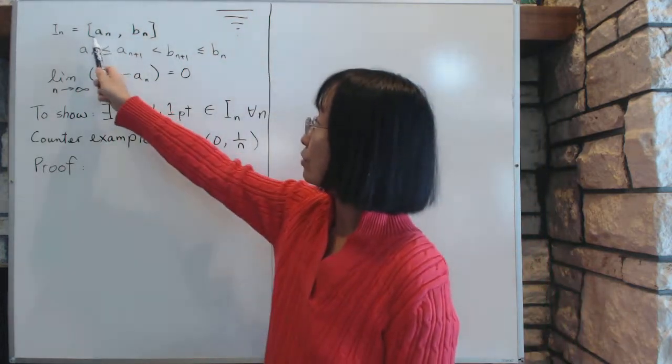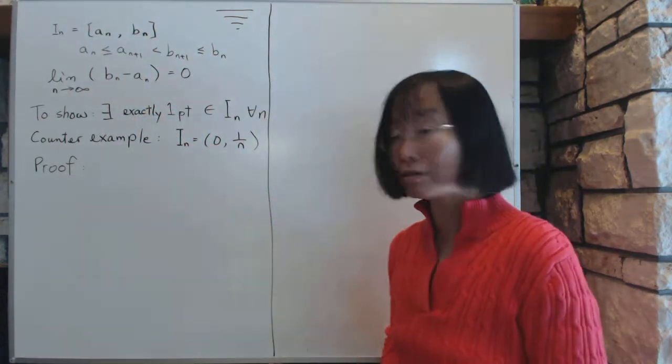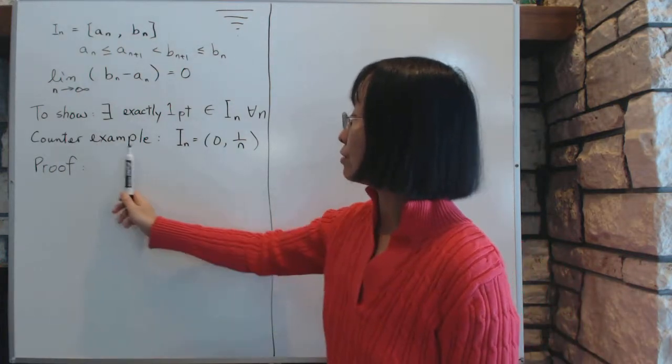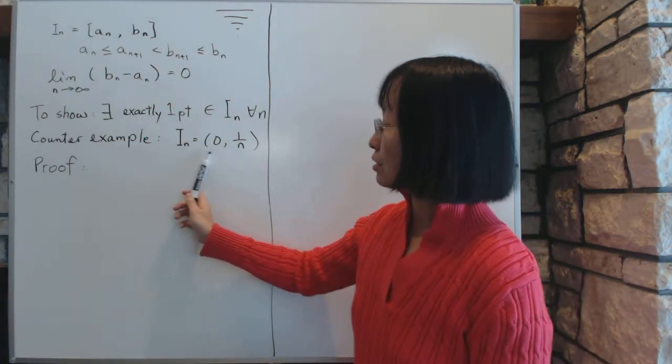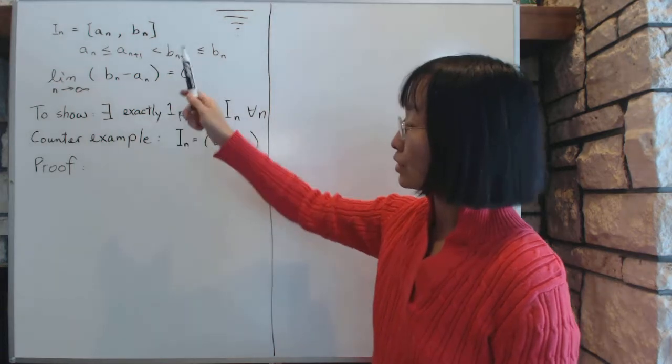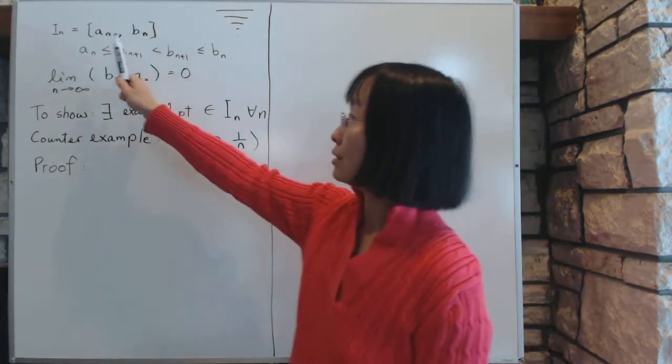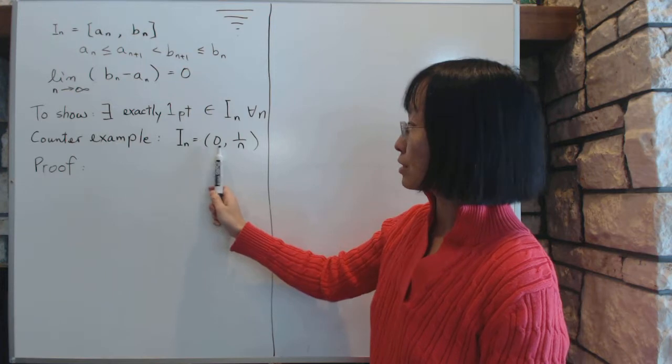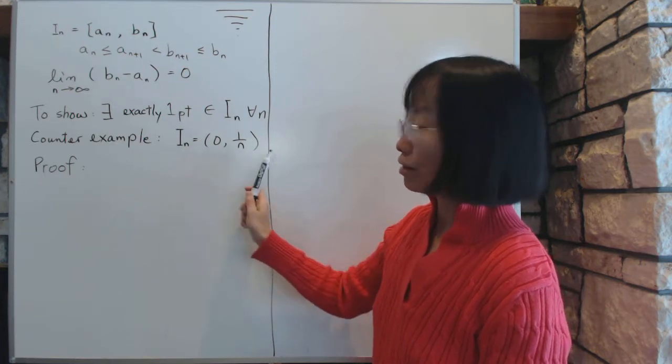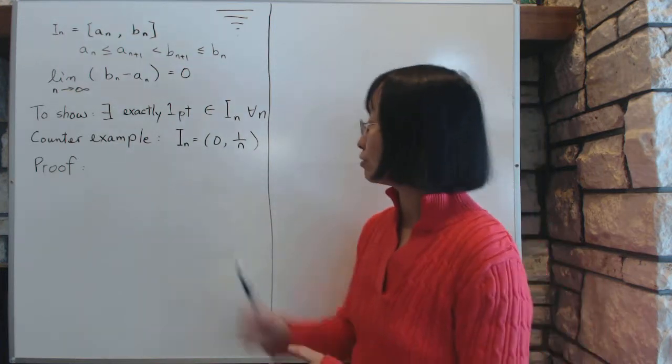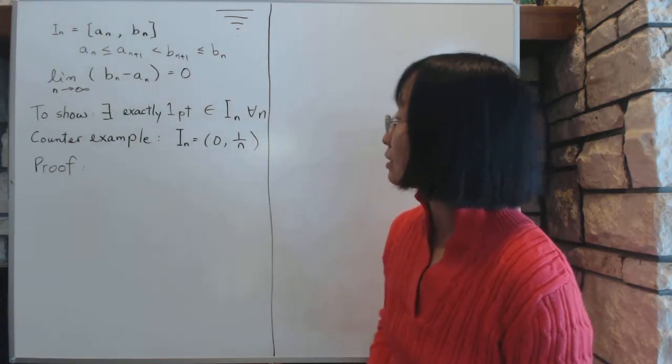Now the fact that this interval has to be closed is of critical importance. Because consider, for example, you have a bunch of intervals that satisfy every condition here, except that it isn't closed, such as intervals from zero to one over n, open. So you don't include the endpoints. On that condition, there isn't anything that's in common with all of them.